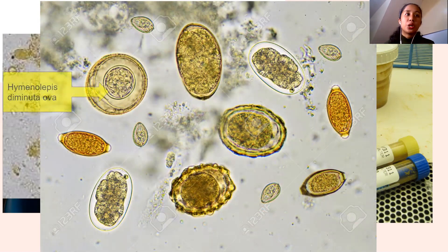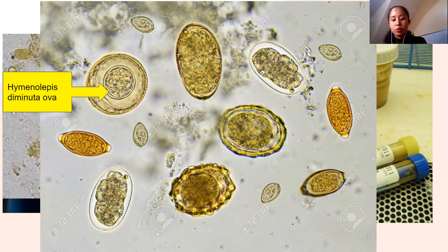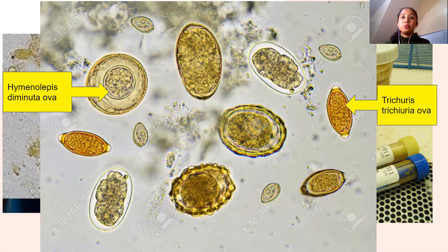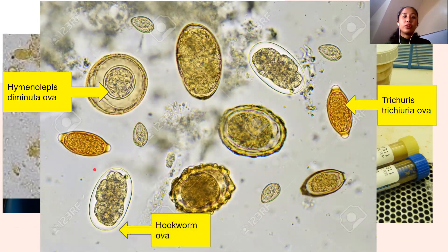That's your Hymenolepis diminuta. Almost all of these are soil-transmitted helminth eggs. People working with soil — farmers, children playing outside who aren't washing their hands — can acquire soil-transmitted helminth eggs. We have Trichuris trichura ova, whose key characteristic is two knobs on the side. These are very common in the Philippines. We also have hookworm ova.